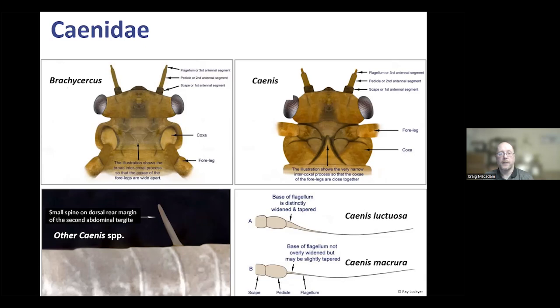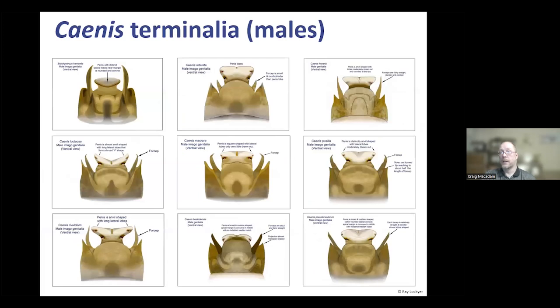Of the two Caenis species — Caenis lactea and Caenis macrura — you need to look at the antenna. At the base of the thin part of the antenna, in lactea it's swollen whereas in macrura it isn't. There are very few other features to separate these. The male genitalia are fairly distinctive, and in combination with other features including grayish markings on the abdominal segments, you should be able to identify them.